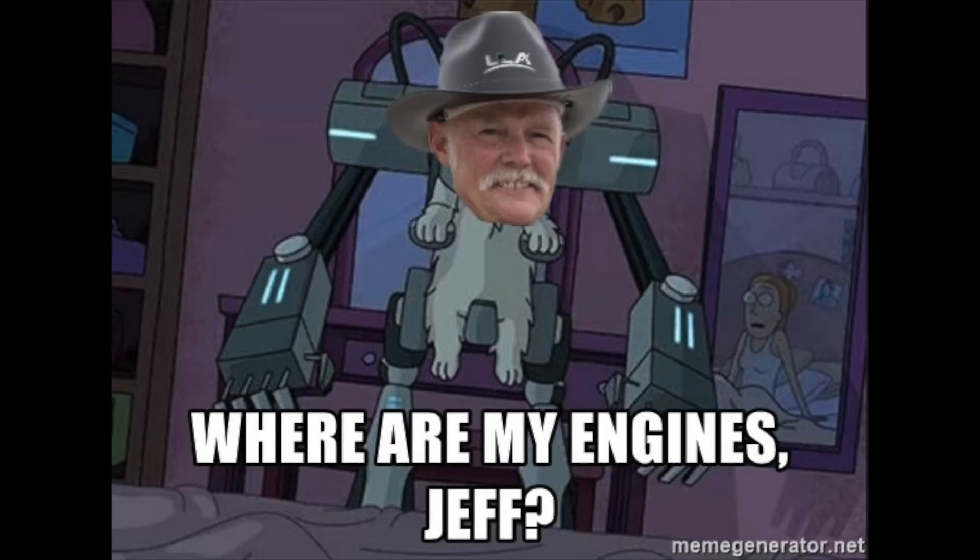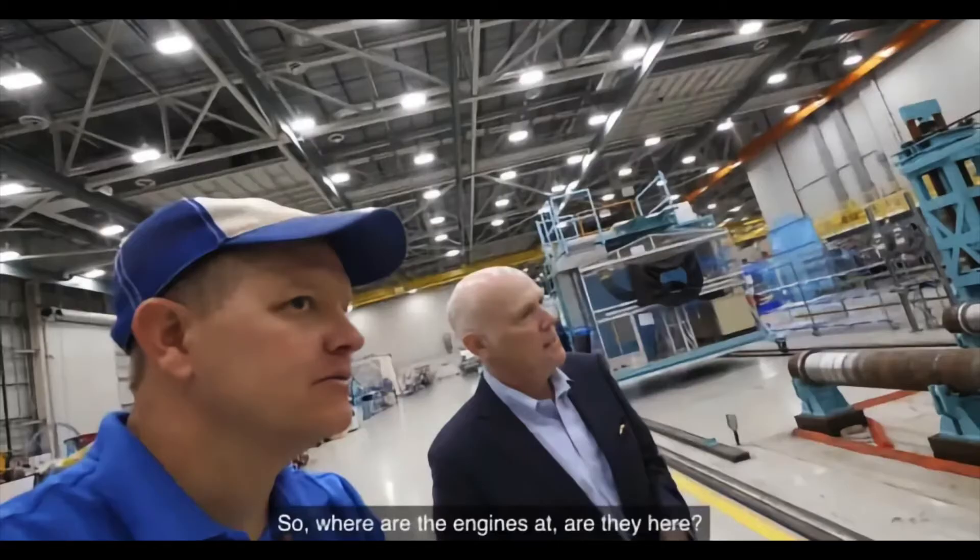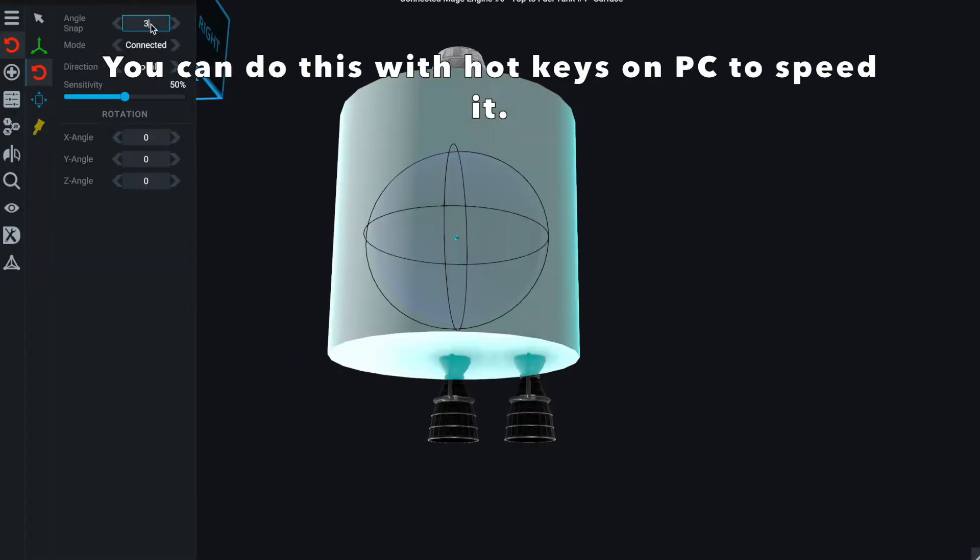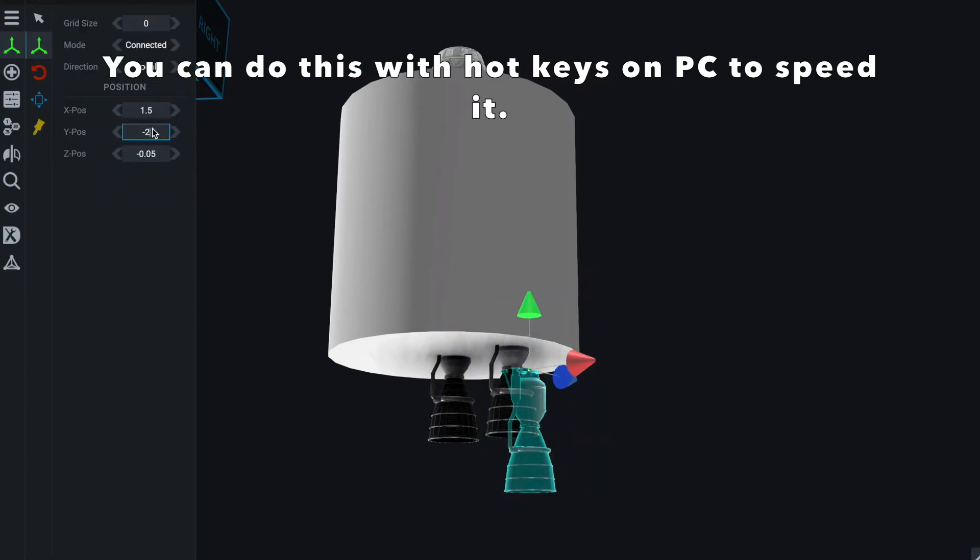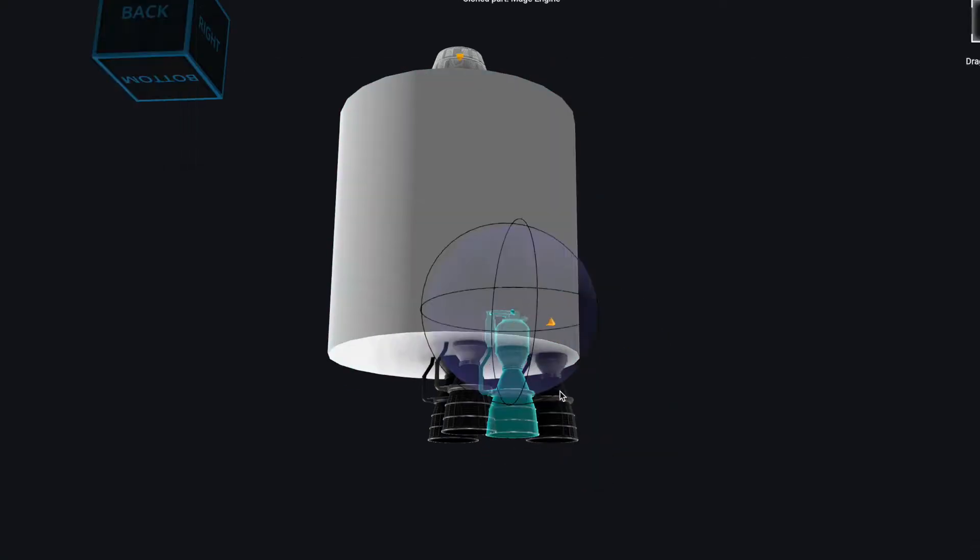To get the engines on your rocket you can either divide the 360 degrees in a circle by the number of engines in the circle and just place the engines where you want it, such as zero one, and rotate it by...